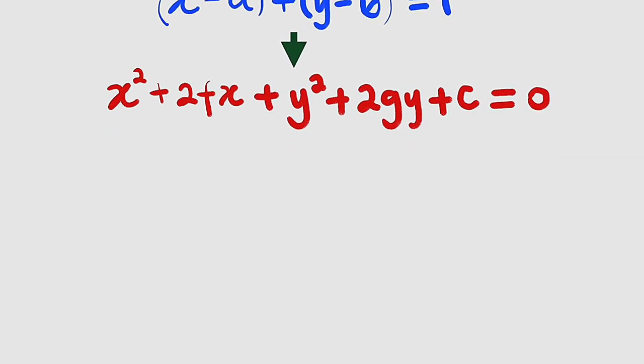So let me start by writing the equation in standard form. We have (x minus a) squared plus (y minus b) squared and this is equal to r squared.